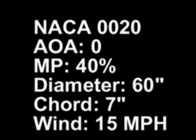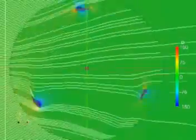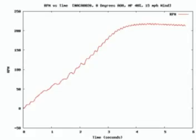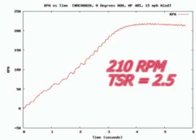The first simulation I'm going to show is my turbine in a 15 mile per hour wind spinning up from a dead start. This is the plot of RPM versus time. The turbine maxed out at about 210 RPM, and that's a TSR of about 2.5.